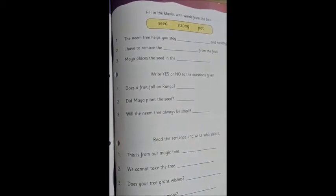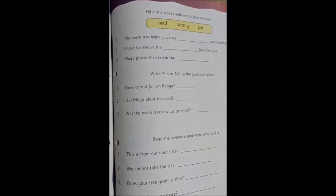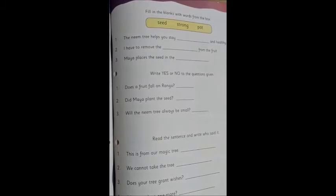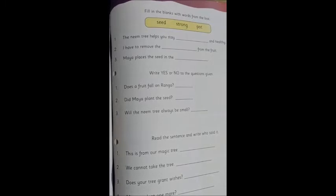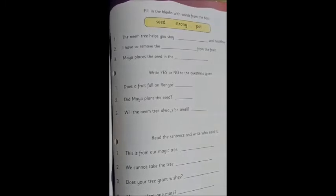The first word is seed. The next word is strong. And the last word is pot. So we know the meaning of these words also. Seed is something from which the plant grows.